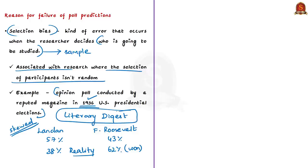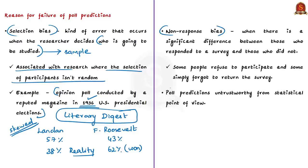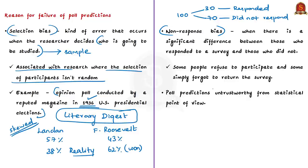The next reason for failure is non-response bias. This happens when there is a significant difference between those who responded to a survey and those who did not. Some people refuse to participate and some simply forget to return responses. Therefore, election results may vary from predictions. There are many statistical reasons for the failure of opinion polls and exit polls, making poll predictions untrustworthy even from a statistical point of view.